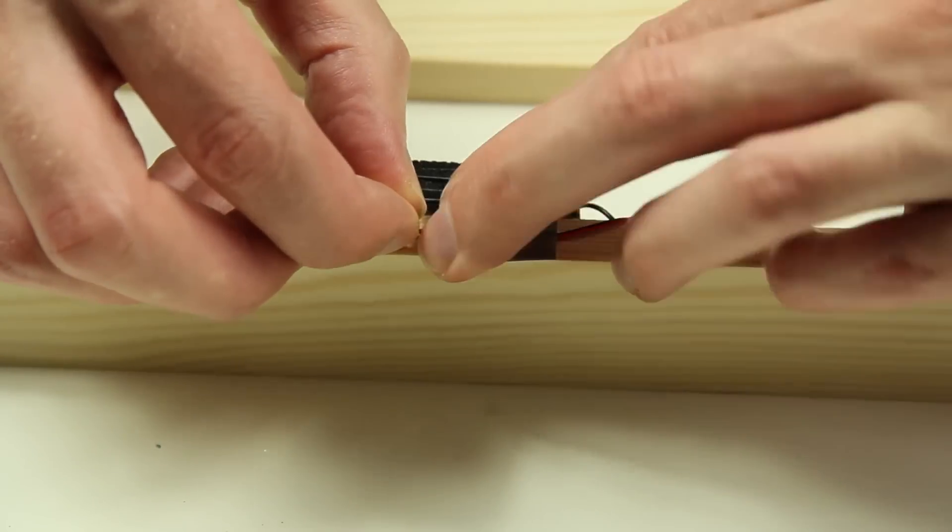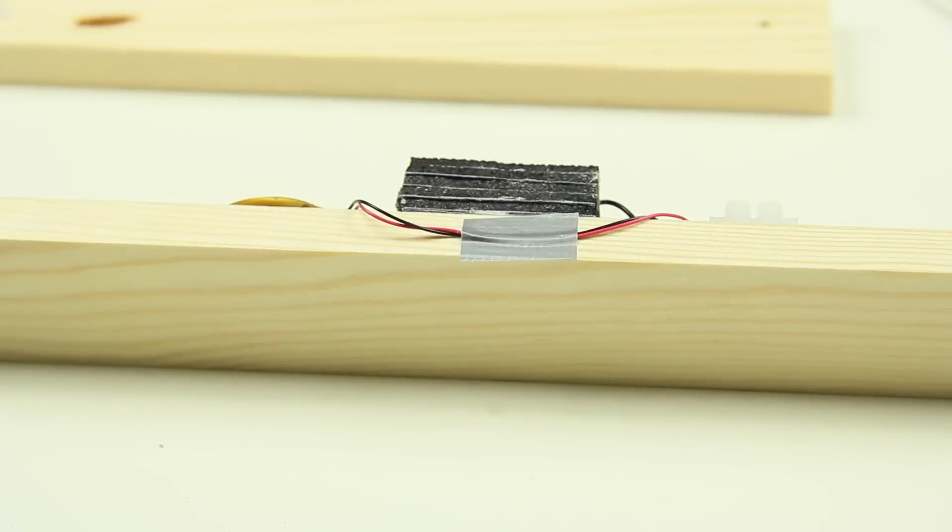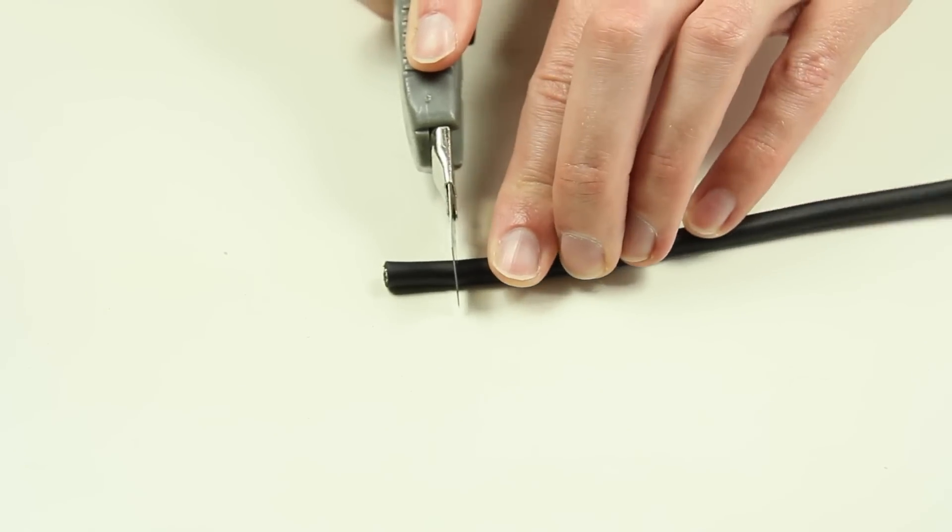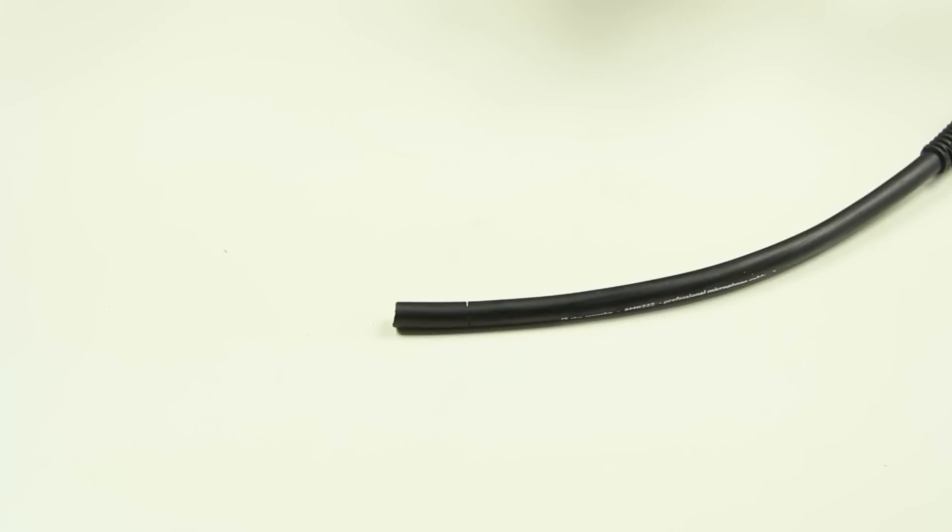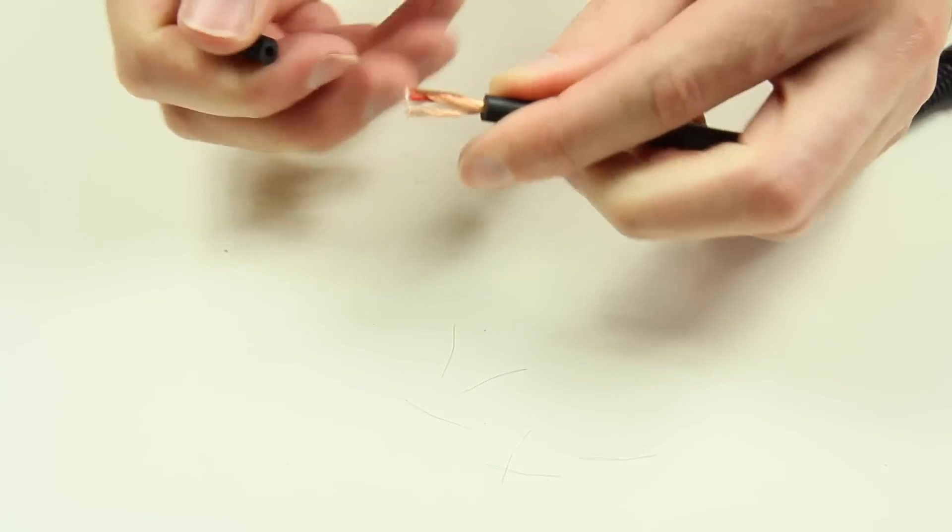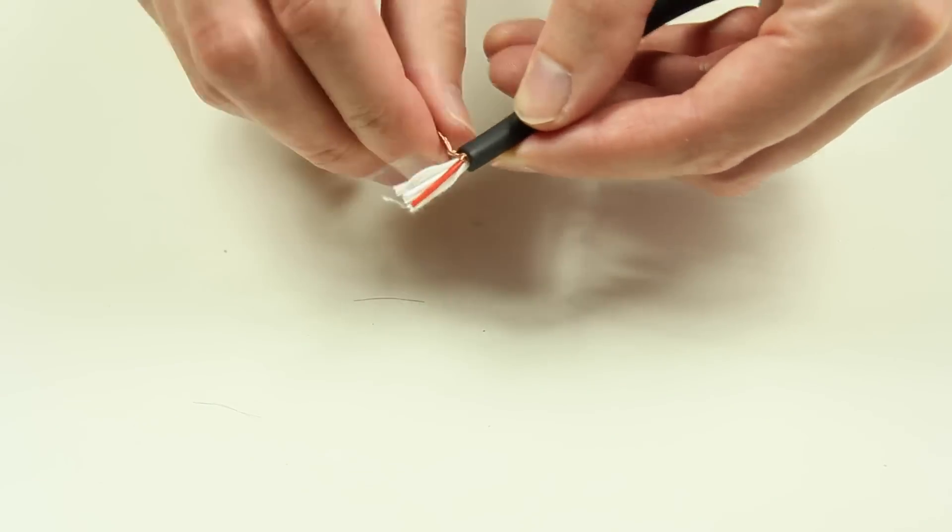Adhesive tape can help to prevent the cable from slacking around. Now we need to de-isolate the cable ends of the jack cable. Cut carefully into the isolation with a knife and remove the outer layer.